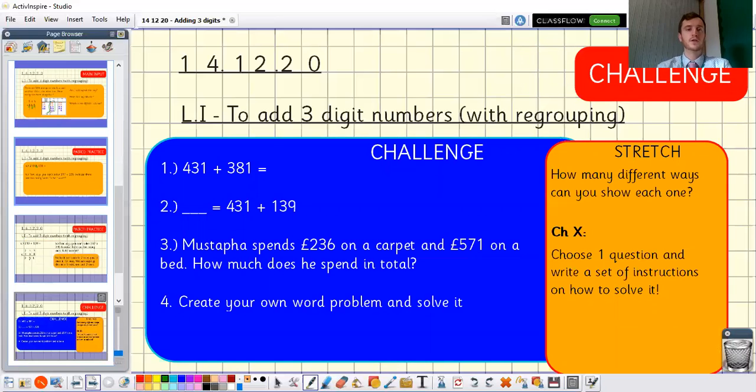Moving on to the challenge. I have some questions for you to solve again. Number one. 431 plus 381. Can you use that column method to solve it? This one I flipped it round but it's much the same. 431 plus 139. Next one I've got a word problem. Mustafa spends £236 on a carpet. £571 on a bed. How much does he spend in total? I'll be thinking ahead to that tricky column as well. And finally can you create and solve your own word problem? Maybe you can write one that links to addition using that language to show that it's addition. If you want a challenge, can you choose one question and write a set of instructions on how to solve it? Maybe you're going to have to break it down step by step how that question will be solved. Once again please pause the video there and we will go through those questions in a moment's time.